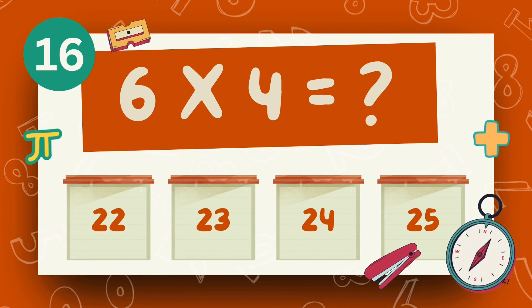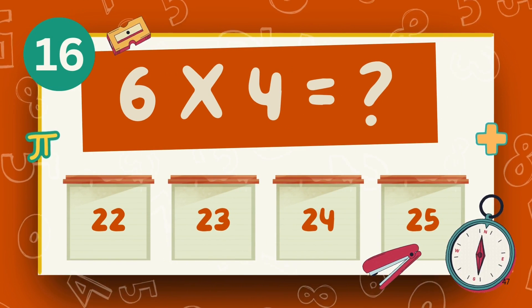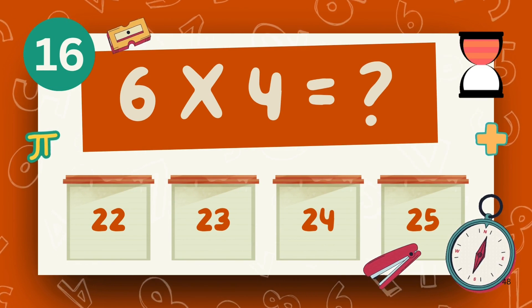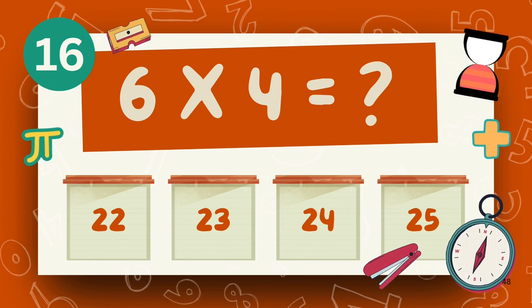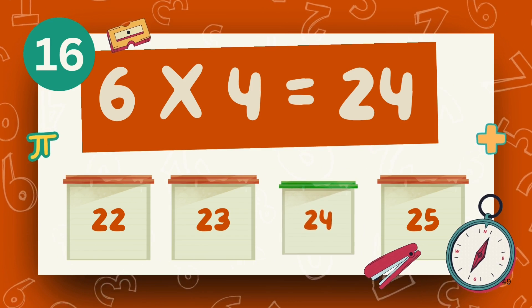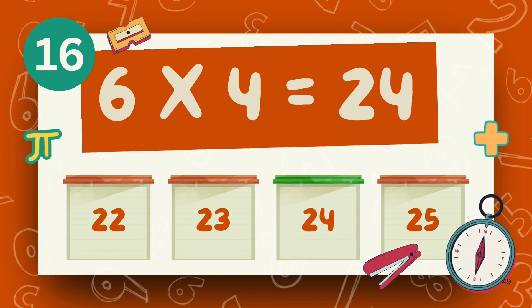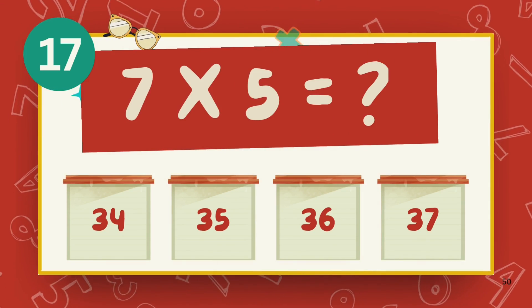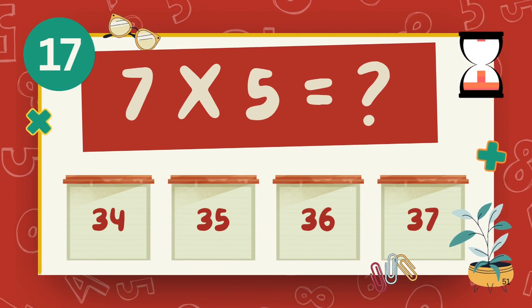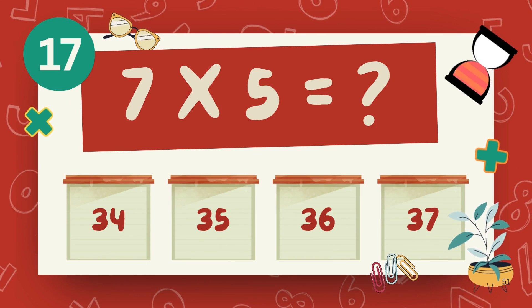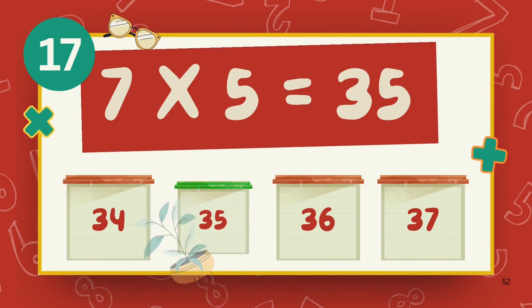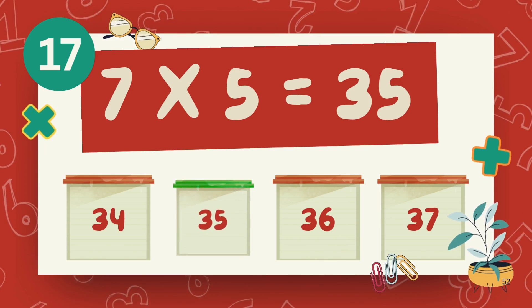What is 6 multiply 4? The answer is 24. What is 7 multiply 5? The answer is 35.